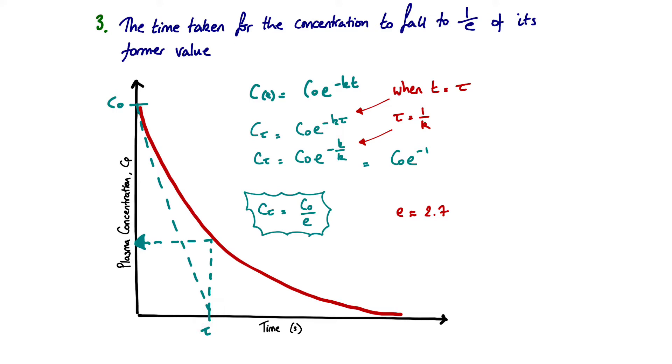Compare that to what we would have seen for a half-life, where if we'd have gone to a concentration of C over 2 and extrapolated across, our half-life would have been around here. So our half-life, as a function of the mathematics, will always be shorter than our time constant.